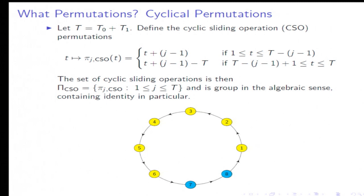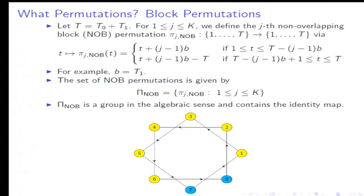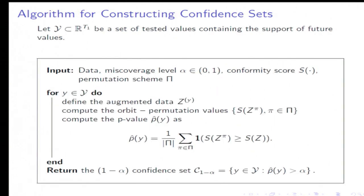If the number of data points is too big, then you could also do the block permutations where you move blocks around the circle. These are the permutation groups that we consider.